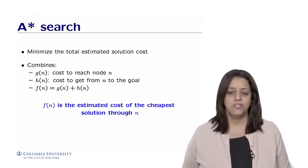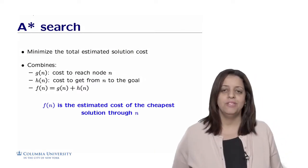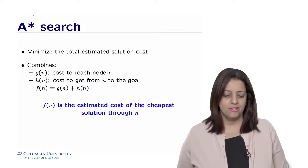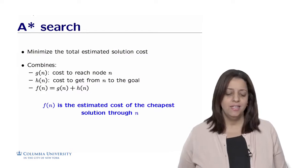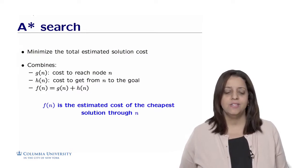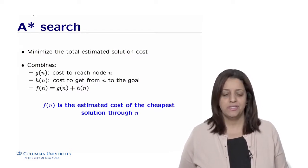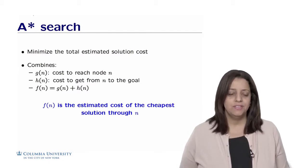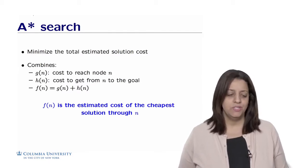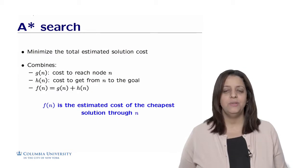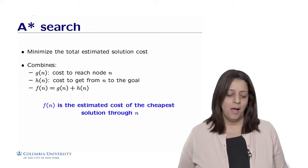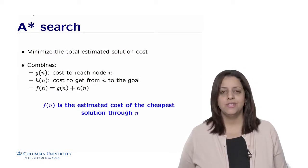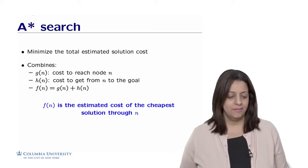We have seen that greedy search does a good job, but not always the best job. For example, between Saint Louis and Salt Saint Mary, we are not getting the shortest path to the goal. So another alternative to greedy search is to use the A* search algorithm, which uses not only the search heuristic but also the cost to reach the node n.